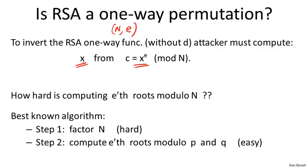So the question really is: given x to the e modulo n, how hard is it to recover x? What we're really asking is how hard is it to compute e-th roots modulo a composite. If this problem turns out to be hard, then RSA is in fact a one-way function.